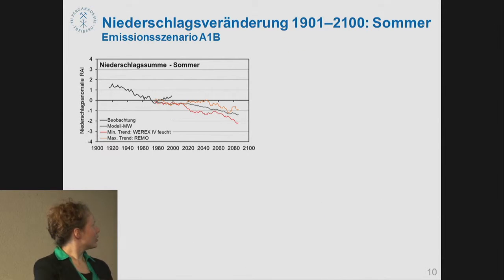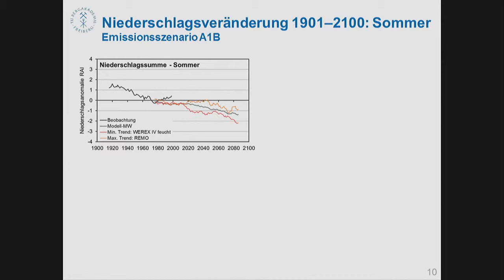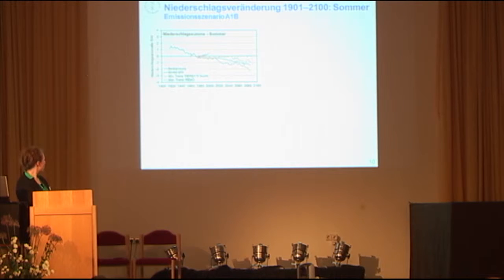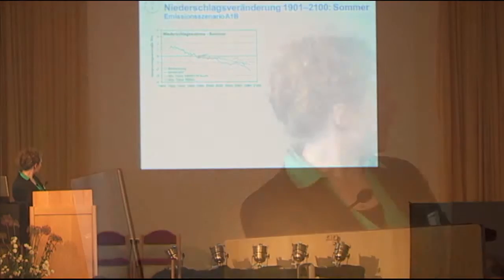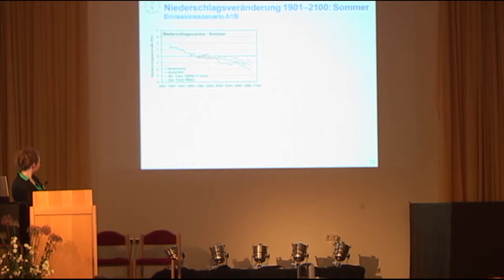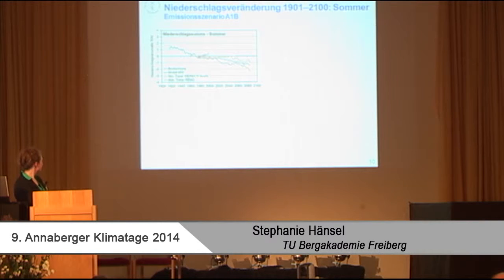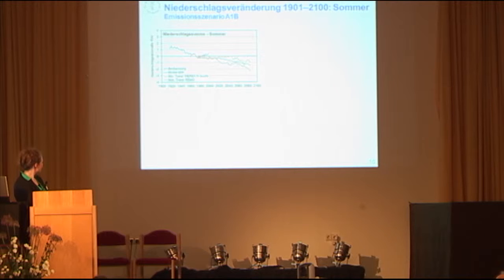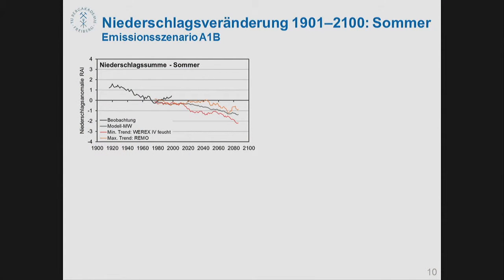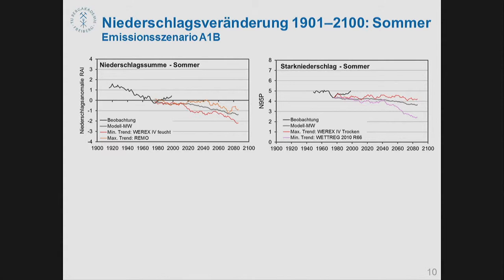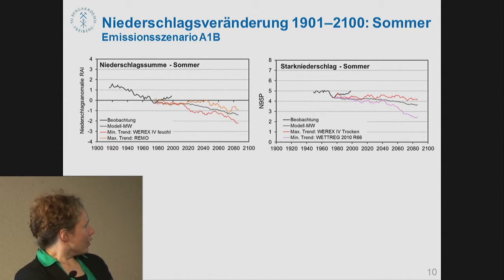These analyses were based on monthly precipitation for the total year. You could also differentiate by seasons. In the observation data, there are different trends by season. In summertime, there was a decrease in precipitation, but over the last 20-30 years there was a slight increase again. In the climate models, the decrease continues more or less — this is one of the most uniform developments, as all climate models show a decrease of precipitation in summer.